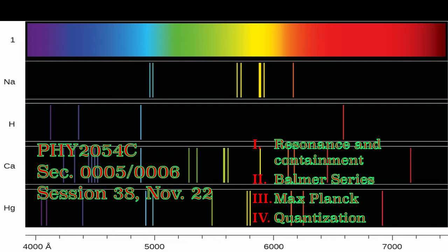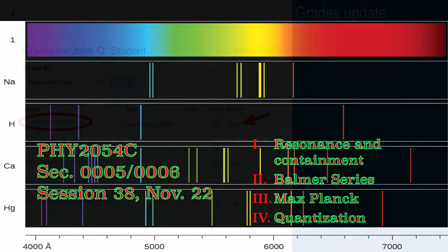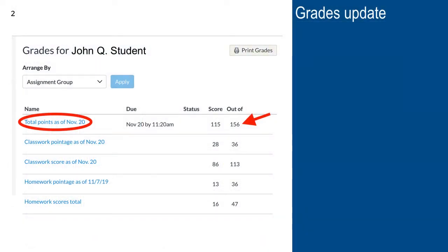We're going to talk about resonance and containment today, then the Balmer series for hydrogen — you can see it in the opening slide, the hydrogen spectrum. And then we're going to talk about Max Planck and the idea of quantization. But before we do that, I want to talk a little bit about the grades update I did yesterday.